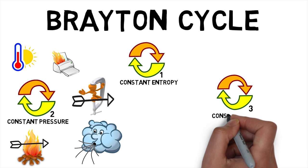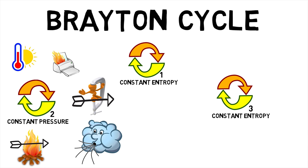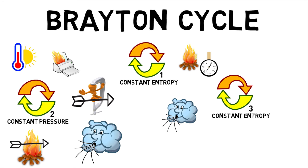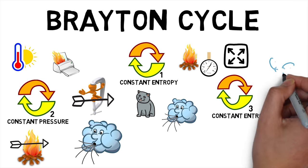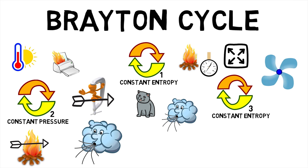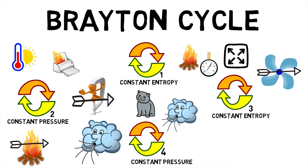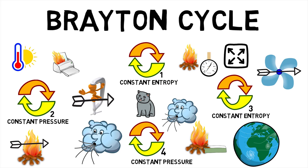Process 3 is an isentropic process wherein the heated pressurized air then gives up its energy, expanding through a turbine or a series of turbines. The final process is an isobaric process wherein heat is rejected to the atmosphere.